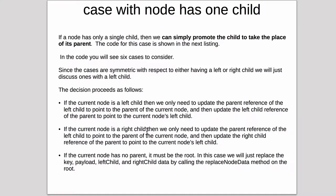If the current node is a right child, then we only need to update the parent reference of the left child to point to the parent of the current node, and then update the right child reference of the parent to point to the current node's left child. This is a symmetrical case, but we're going to cover both. If the current node has no parent, it must be the root — that's a special case. In this case, we will just replace the key, payload, left child, and right child data by calling the replaceNodeData method on the root.